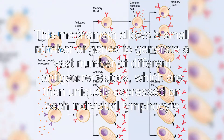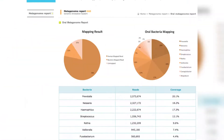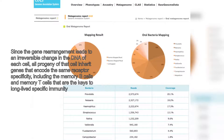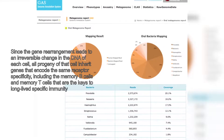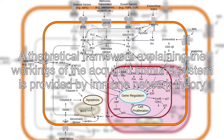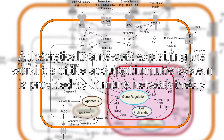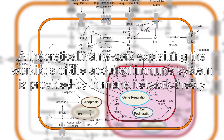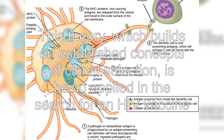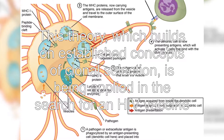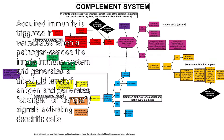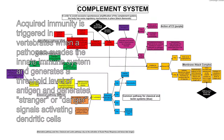The acquired response is called adaptive because it prepares the body's immune system for future challenges. The system is highly adaptable because of somatic hypermutation and VJ recombination. This mechanism allows a small number of genes to generate a vast number of different antigen receptors, which are then uniquely expressed on each individual lymphocyte. Since the gene rearrangement leads to an irreversible change in the DNA of each cell, all progeny of that cell inherit genes that encode the same receptor specificity, including the memory B cells and memory T cells that are the keys to long-lived specific immunity.